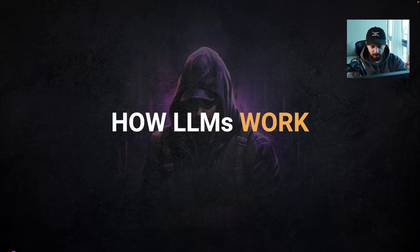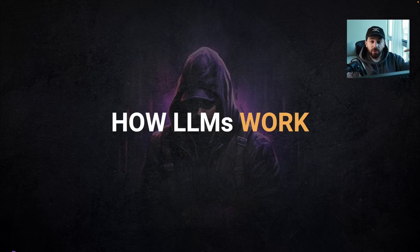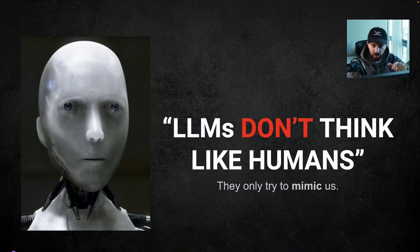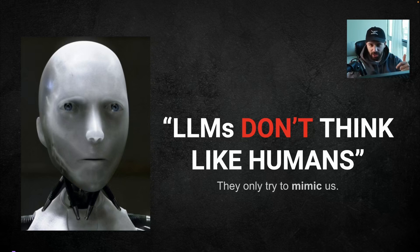Now, how do LLMs actually work? We've seen what they're comprised of — literally just two files implementing a neural network — but how do they actually work? The first thing to understand is that LLMs don't think like humans; they only try to mimic us. So when you use ChatGPT, don't think it's thinking like a human. We assume it does because we're interacting and talking like humans, but if you understand how LLMs truly work, you can start prompting them completely differently.